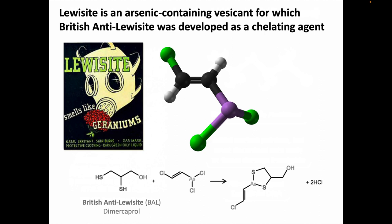Lewisite is an arsenic-containing vesicant. It was developed for use in World War I, and an antidote was even developed for it — the chelating agent called British anti-Lewisite, or dimercaprol. Lewisite was never actually used in World War I; a shipment was made from the US to Europe in 1918, but the war ended before it got there. While many of the clinical effects from Lewisite are the same as for sulfur mustard, Lewisite causes irritation and pain immediately, while the symptoms from mustard are delayed.